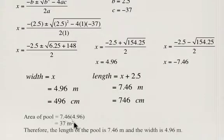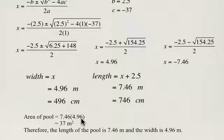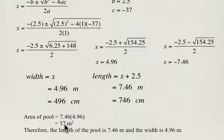Let's check this now. The area of the pool is length times width: 7.46 times 4.96. It's a good idea to try this on your calculator to check your solution. You get approximately 37 meters squared — it's off by about one one-thousandth. Therefore, the length of the pool is 7.46 meters and the width is 4.96 meters.